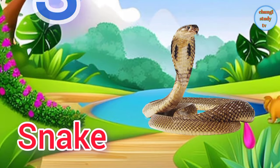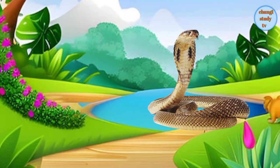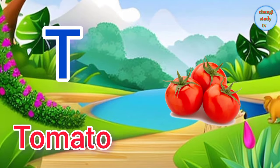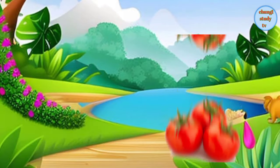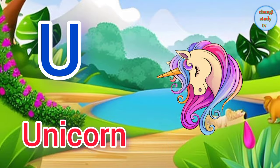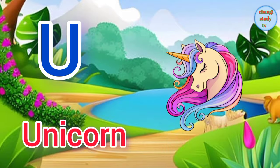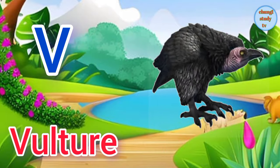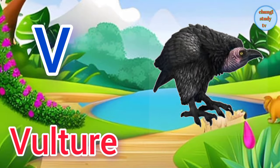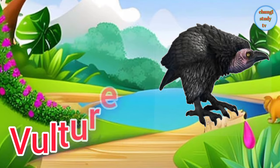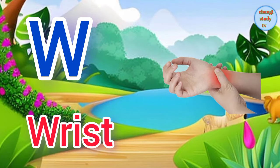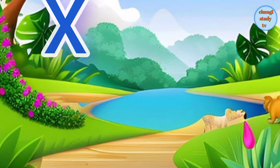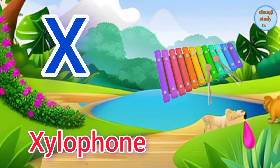S for snake. T for tomato. U for unicorn. V for vulture. W for wrist.